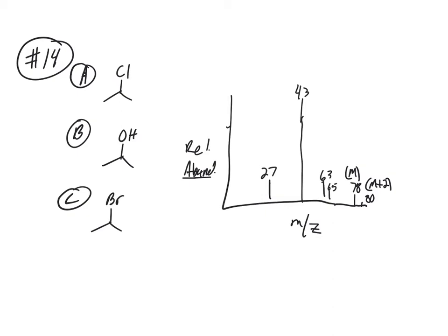So if you look here at the end, this M and M plus 2, you see these are two mass units apart, and you see this is like a three-to-one ratio. So that should tell you that's chlorine, right?